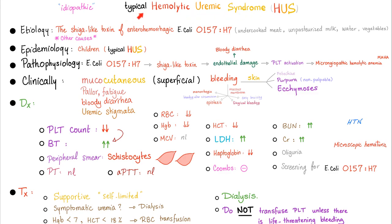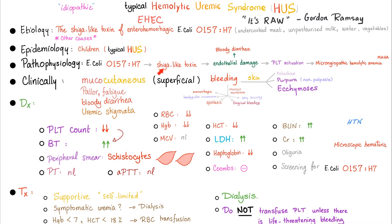Now let's talk about typical hemolytic uremic syndrome. The typical form occurs in children and has diarrhea. The etiology is the shiga-like toxin of enterohemorrhagic E. coli (EHEC). The child probably consumed undercooked meat, unpasteurized milk, water, or vegetables contaminated with EHEC. The shiga-like toxin damages the endothelium of blood vessels — it's called shiga-like because it's similar to the Shigella toxin (Shiga toxin), but this one is shiga-like or "Shigelloid." This shiga-like toxin hampers and damages the endothelium of the blood vessel.